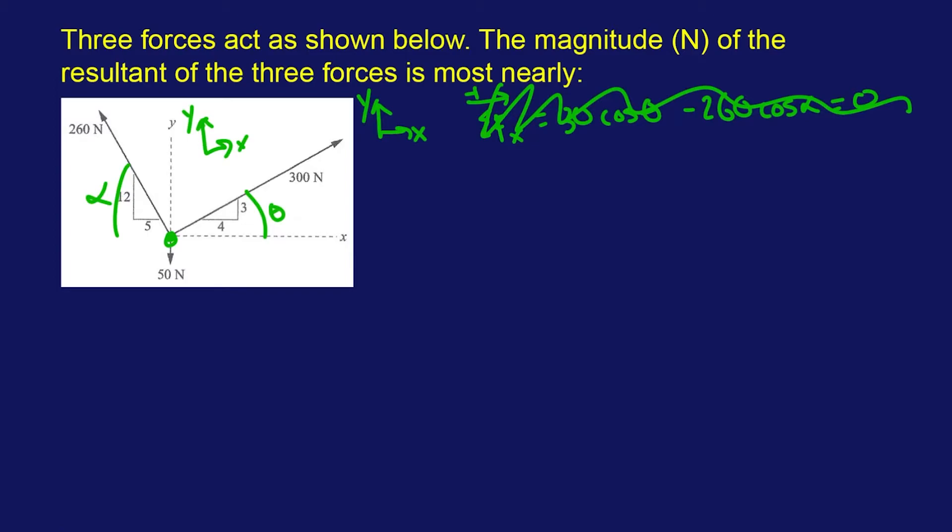Well, I could have kept that. So, it was 300 cosine of theta. Cosine of theta is about a right triangle, right? So, this is 3, 4, 5, and this is theta. Cosine adjacent over hypotenuse. That's three-fifths. And then, 260 cosine of alpha.